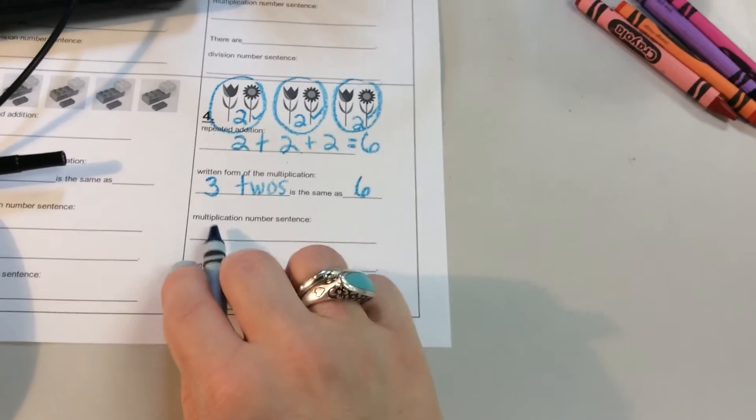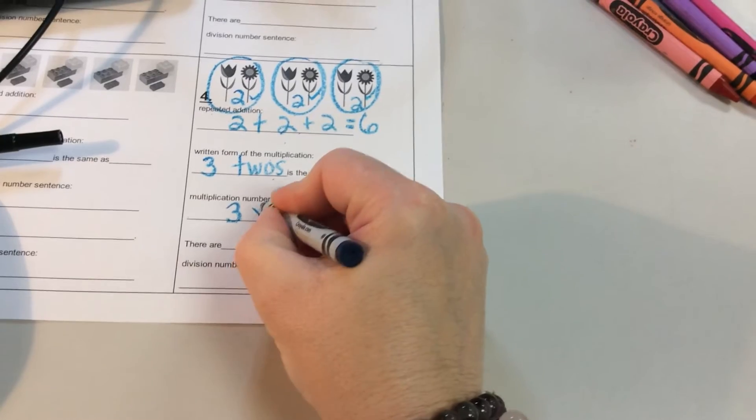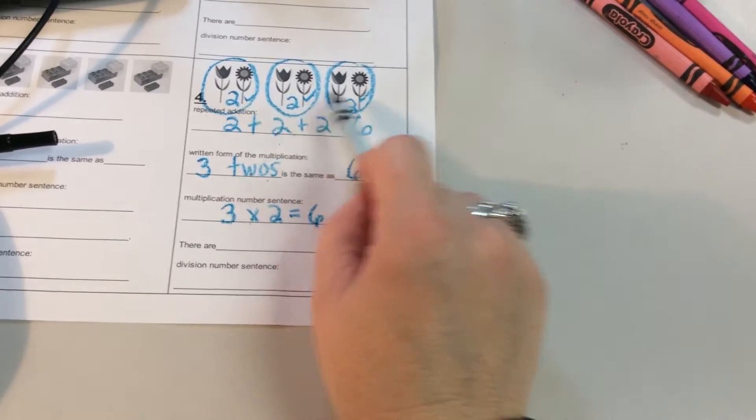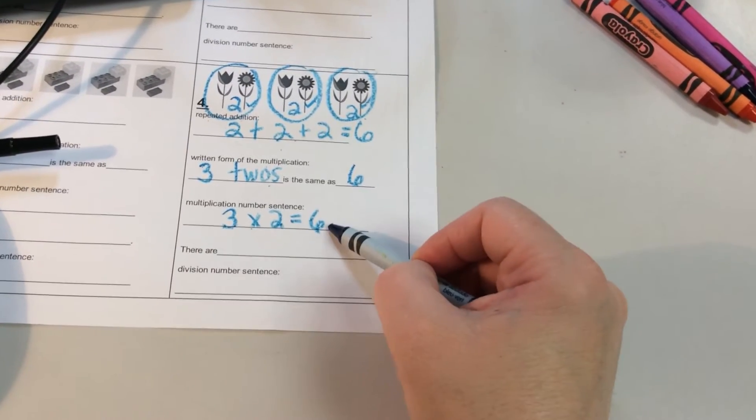The multiplication number sentence helps us with this. I have three groups of two, which is equal to six. I have three groups. Each one has two. And our whole is six.